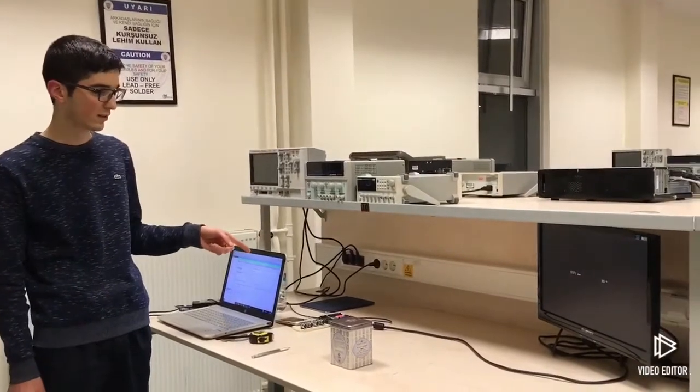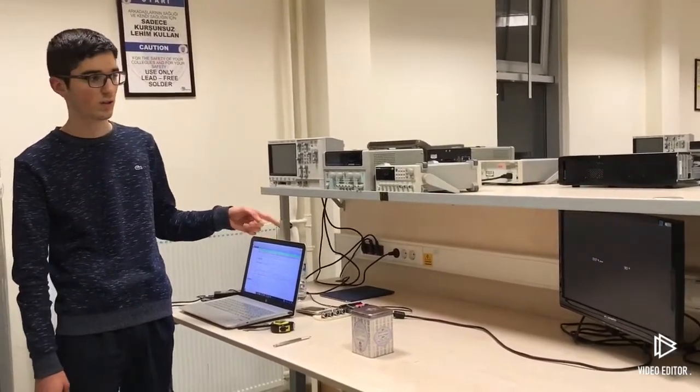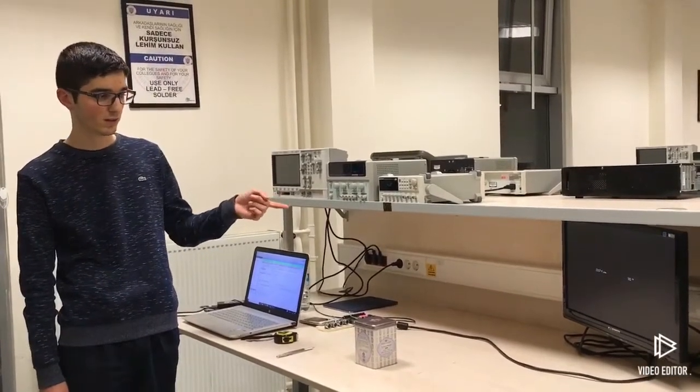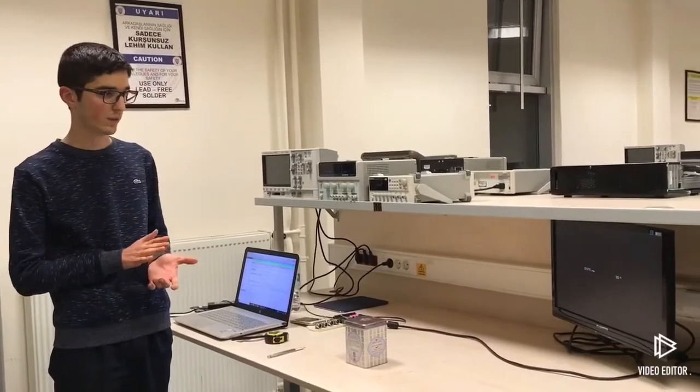And since the Basys 3 has 100 megahertz clock, by using a simple clock divider process, we can easily make a 25 megahertz clock.